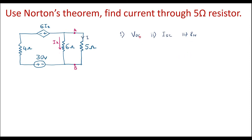Now let us see what is VOC. VOC is nothing but open circuit voltage, calculated across terminals A and B, keeping A and B open. In Norton's theorem, the branch in which we are finding current is supposed to be removed. If I remove this 5 ohm resistor connected to terminals A and B, this terminal becomes open. Then we calculate the voltage between A and B, which is VOC.